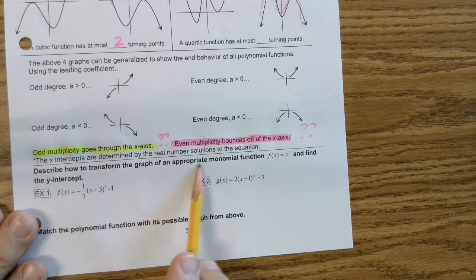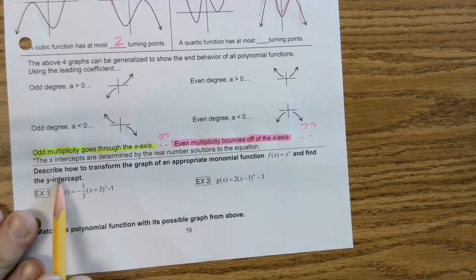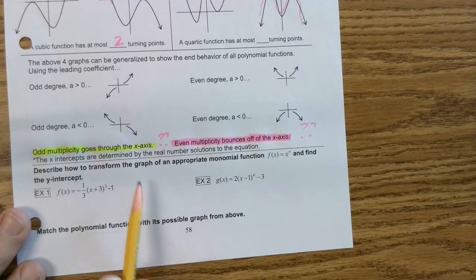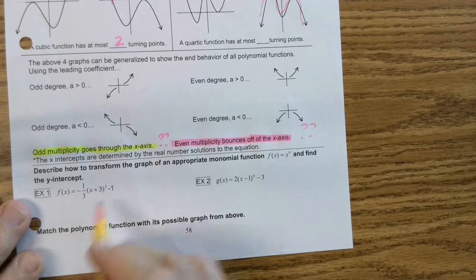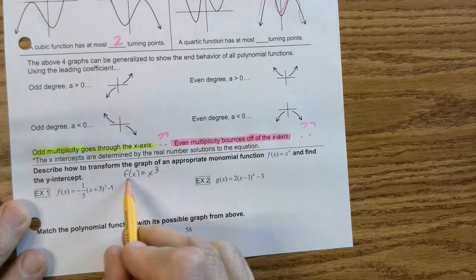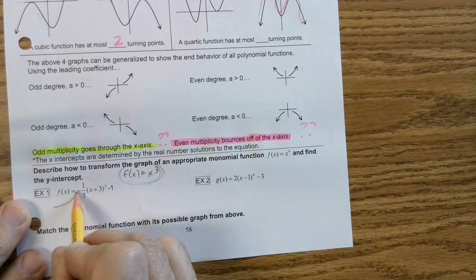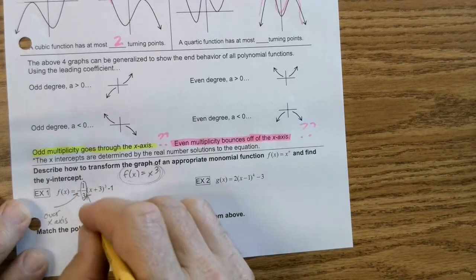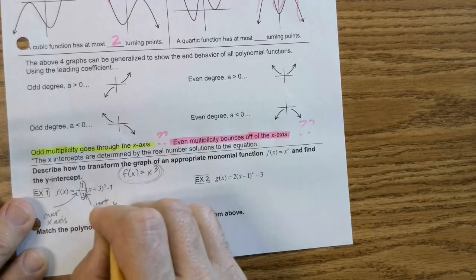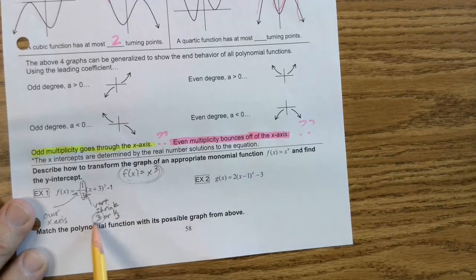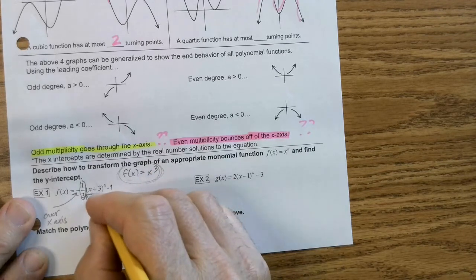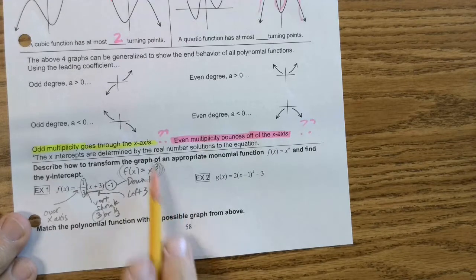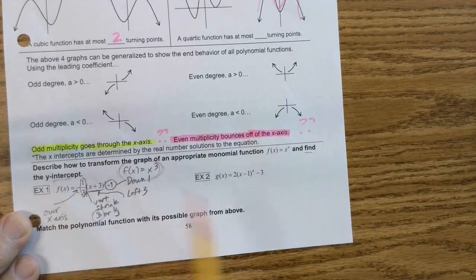It says, describe how to transform the graph of an appropriate monomial function f of x equals x to the nth and find the y-intercept. So what this is saying is, we look at our parts, and if we have f of x equals x cubed, this is what we would refer to as normal. Now, we're going to go to our rules. That right there would flip it over the x-axis. That one-third, because it's less than 1, is going to be a vertical shrink. Plus 3 would be left 3. Minus 1 would be down 1.